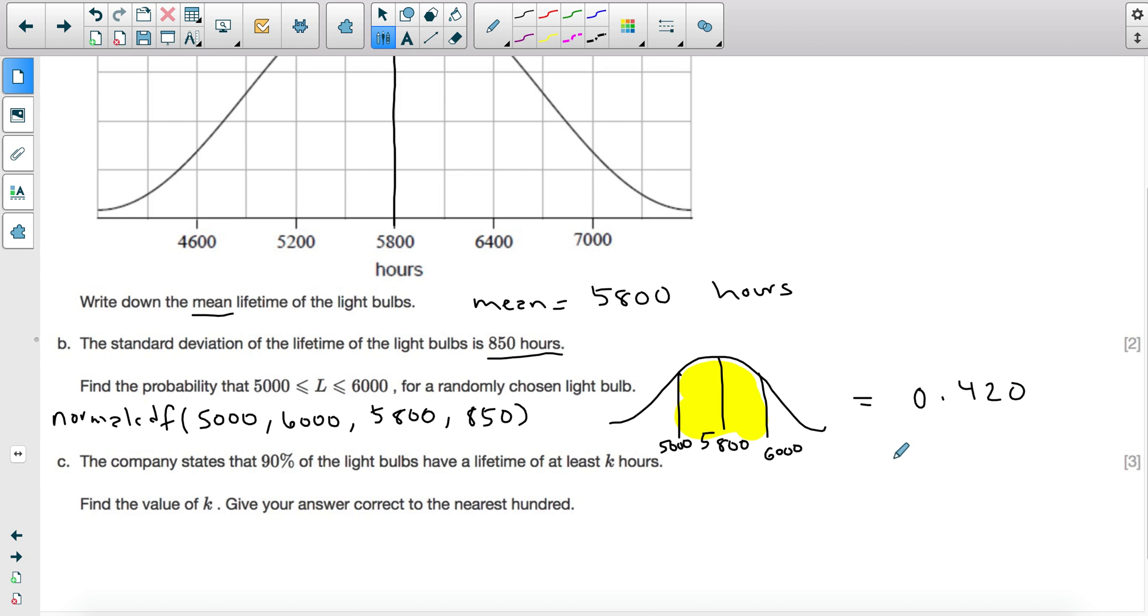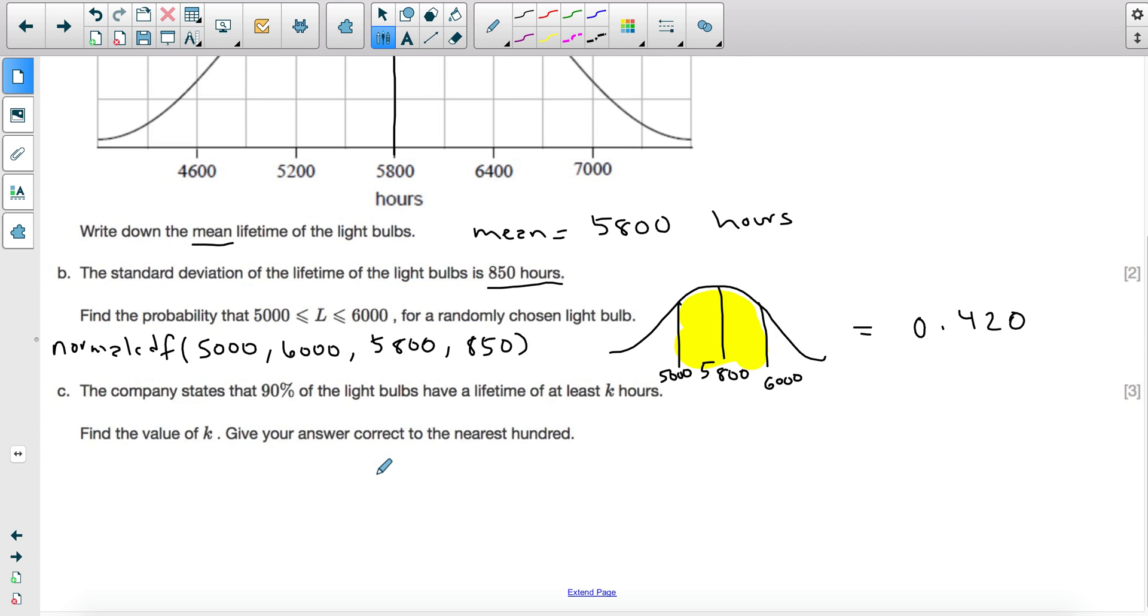This is obviously rounded. If you round, be careful. You need to make sure that you're either rounding up or down depending on the number. Don't just pick the number. Make sure that I had to check if I had to round the zero or not. So this is your answer for part B.